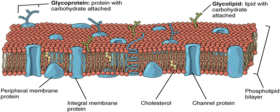The lipid bilayer consists of two layers: an outer leaflet and an inner leaflet. The components of bilayers are distributed unequally between the two surfaces to create asymmetry between the outer and inner surfaces. This asymmetric organization is important for cell functions such as cell signaling. The asymmetry of the biological membrane reflects the different functions of the two leaflets. Certain proteins and lipids rest only on one surface of the membrane and not the other.